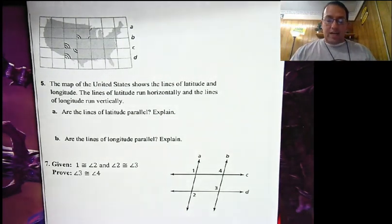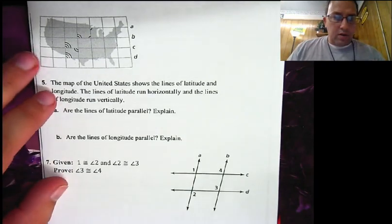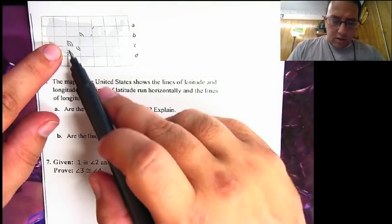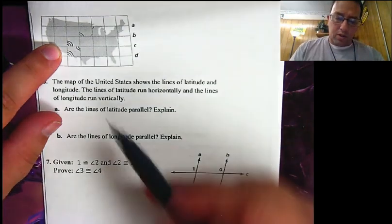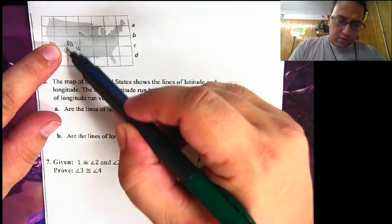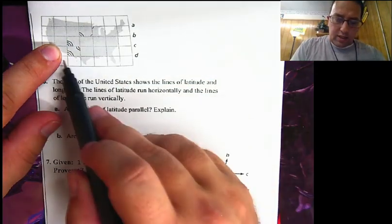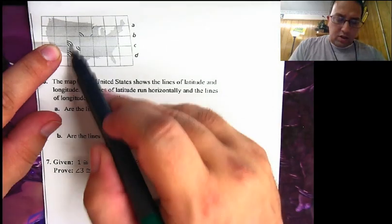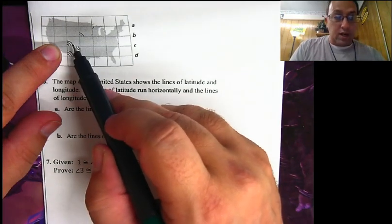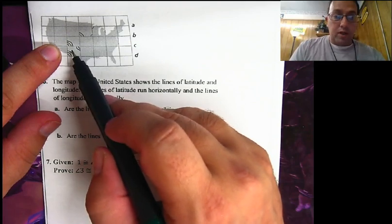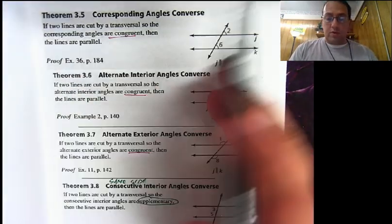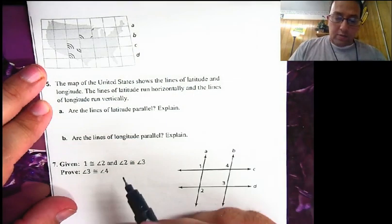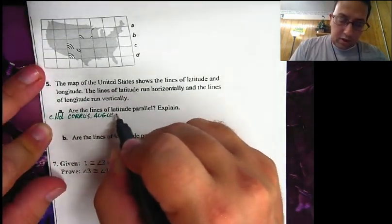Question A: are the lines of latitude parallel? Looking at the angles marked with three arcs — they're congruent because they have the same arc markings. Using the transversal, we're looking at lines C and D. These angles are in the same position — both in the top right — so they are corresponding angles, and the corresponding angles are congruent. Therefore C is parallel to D by the corresponding angles converse.